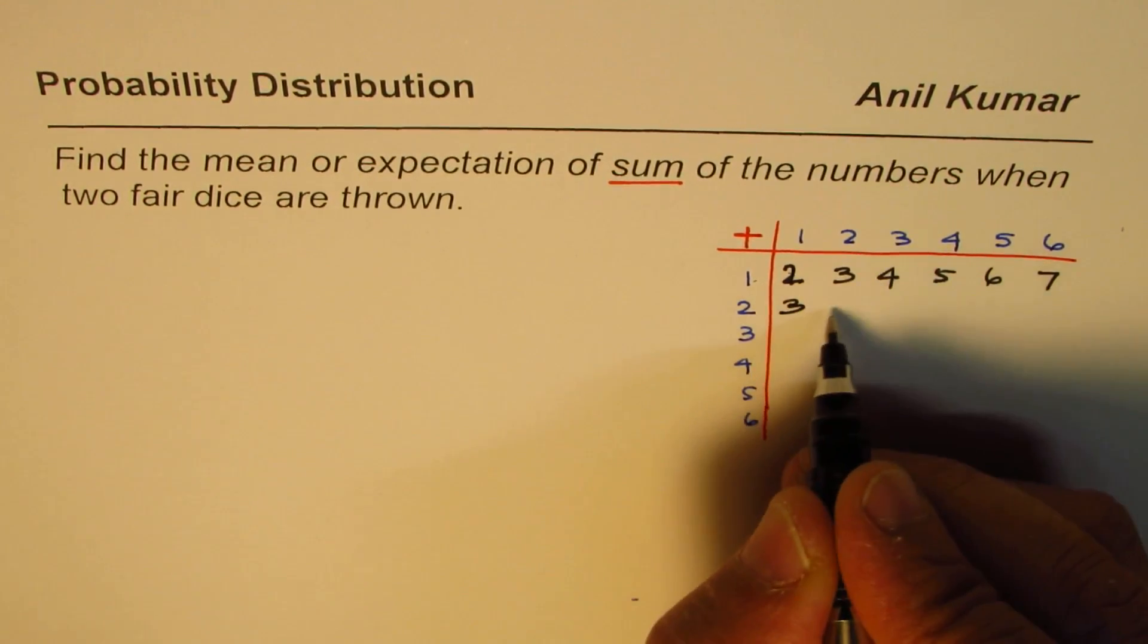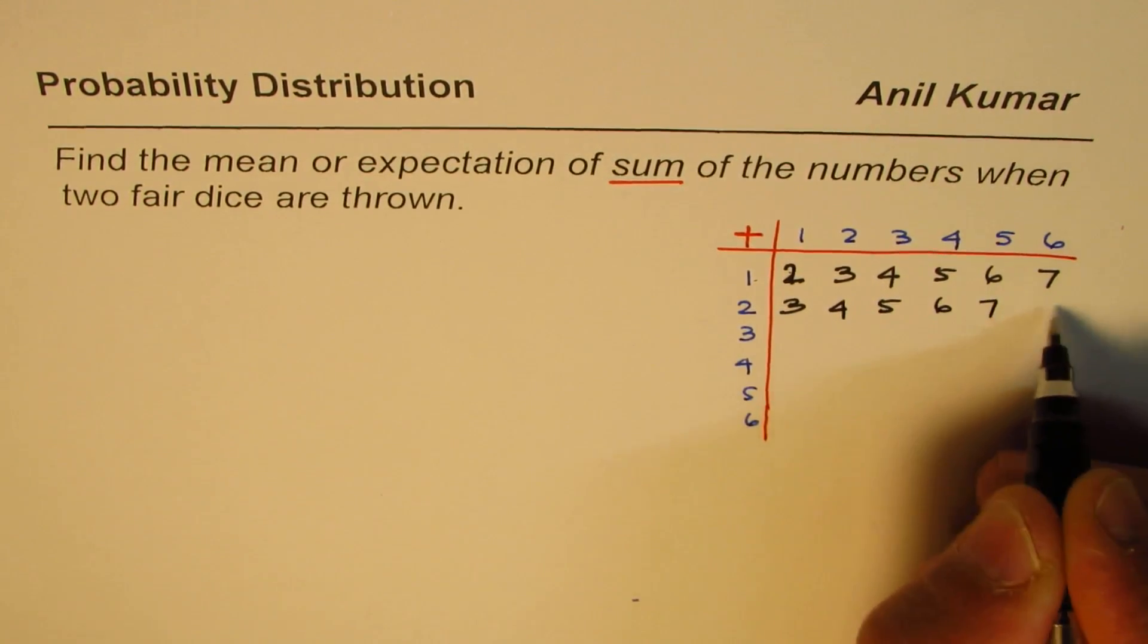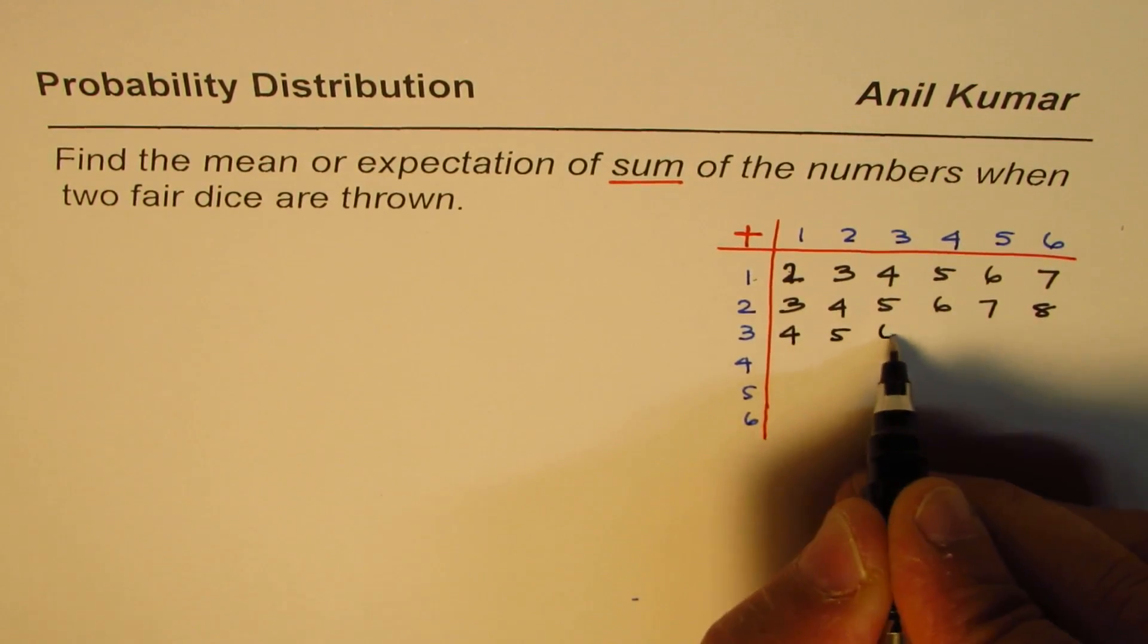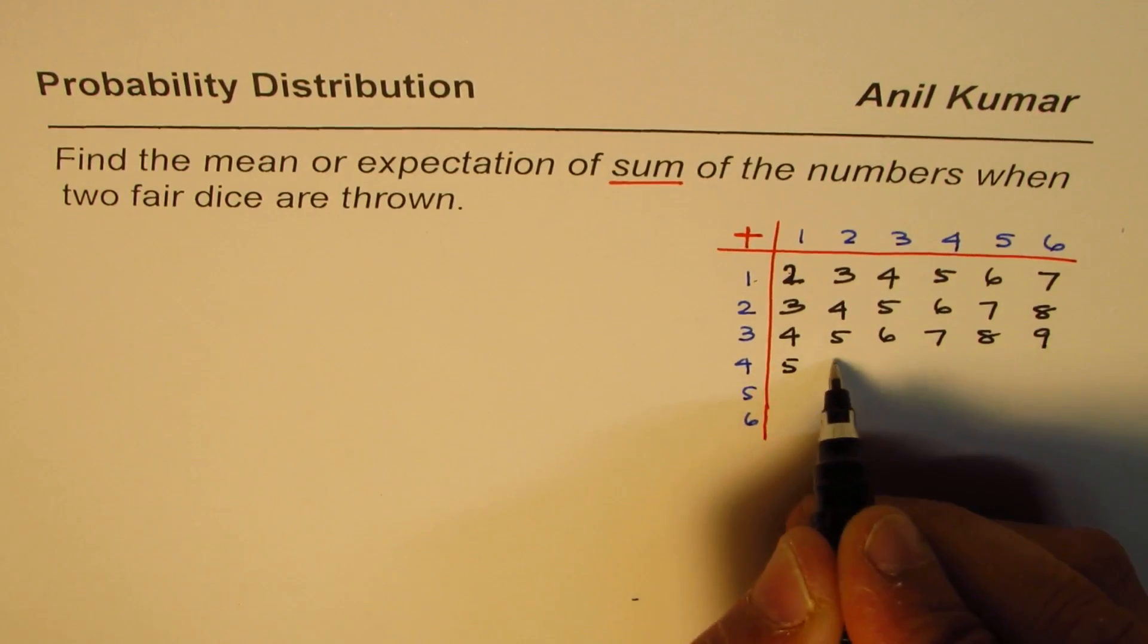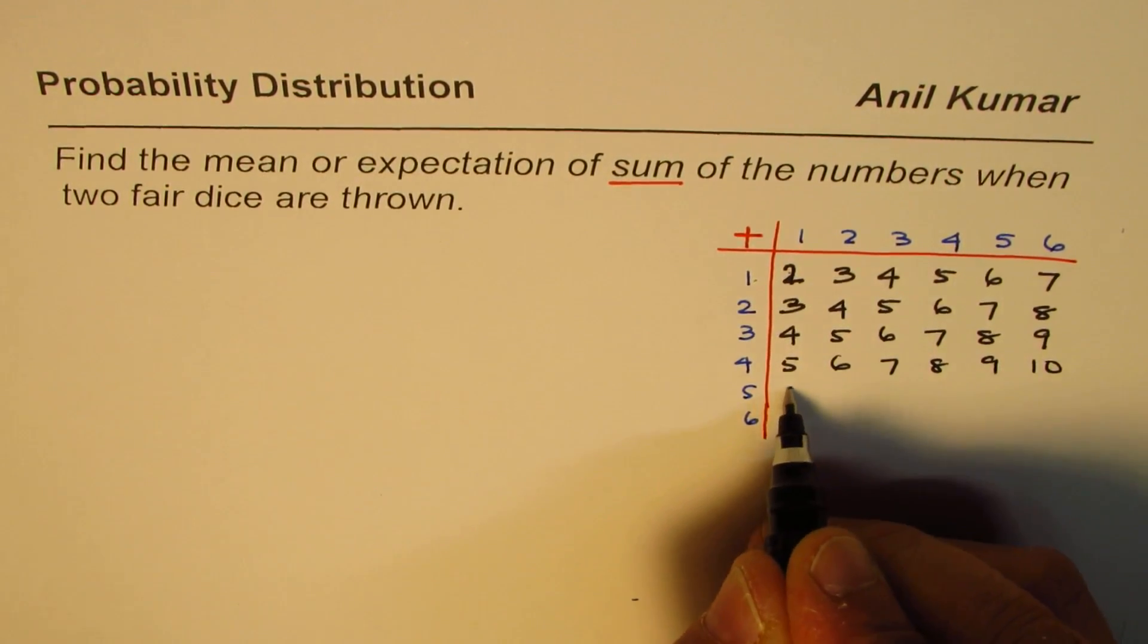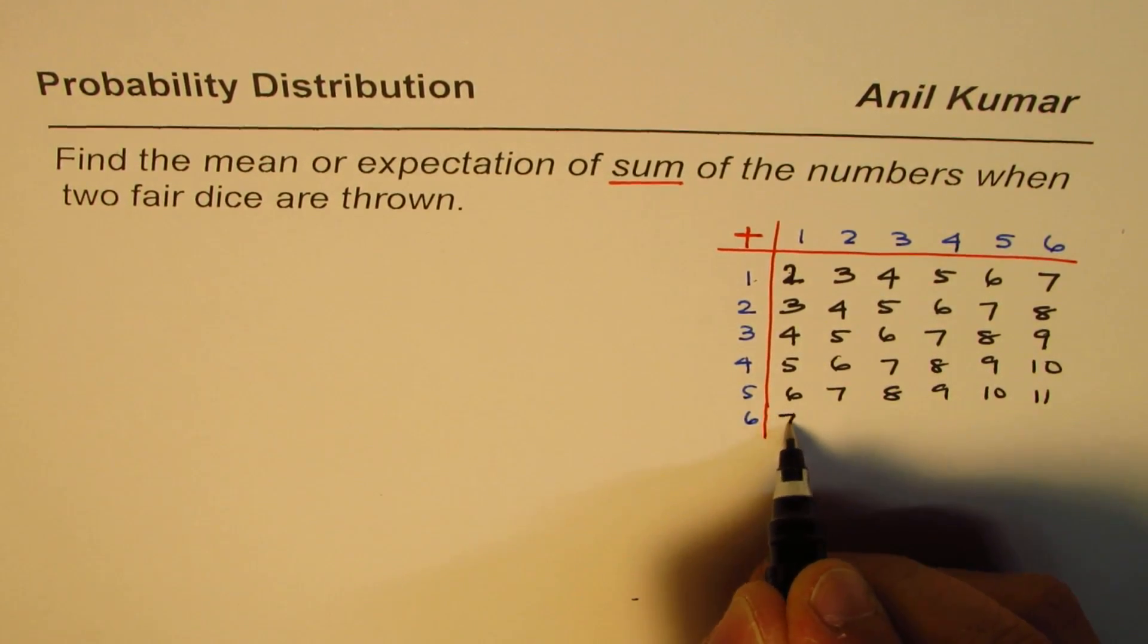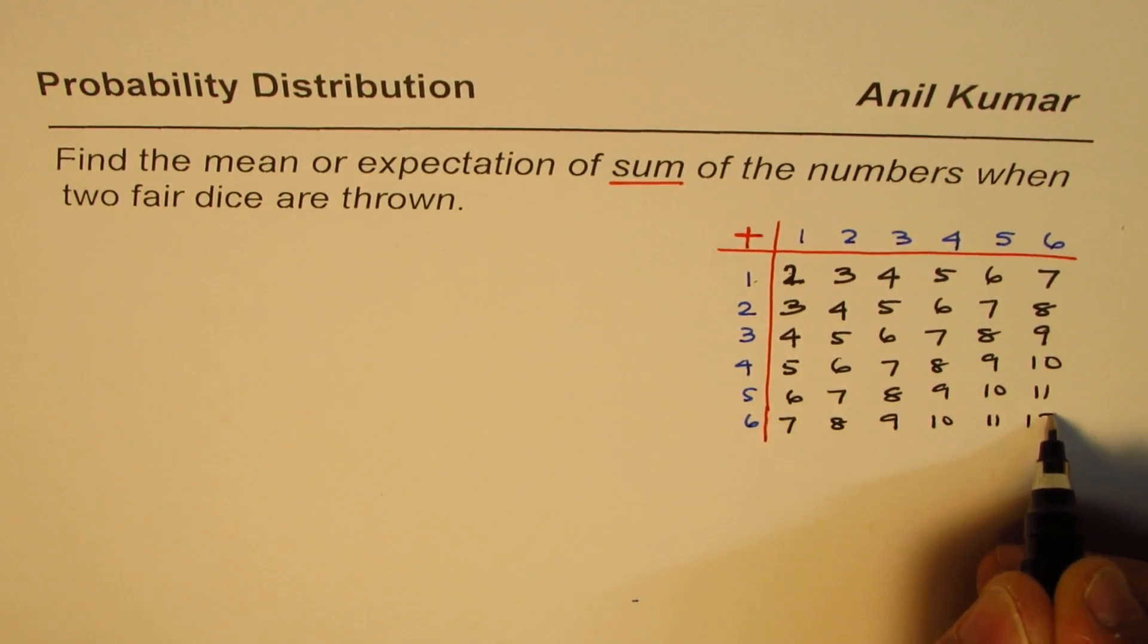2 plus 1 is 3, then 2 plus 2 is 4, 5, 6, 7, 8. 3 plus 1 is 4, then we get 5, 6, 7, 8, 9. 4 plus 1 is 5, 6, 7, 8, 9, 10. Then 6, 7, 8, 9, 10, 11. And finally 7, 8, 9, 10, 11, 12.